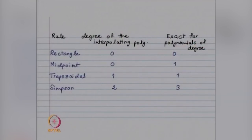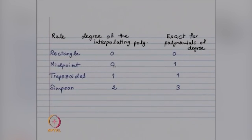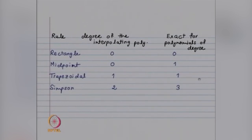For the rectangle rule, the degree of the interpolating polynomial was 0 and you got exactness for polynomials of degree 0. For the trapezoidal rule it was degree 1 in both cases. For the midpoint, the degree of the interpolating polynomial was 0 and you had exactitude for linear polynomials. For Simpson, a quadratic polynomial was interpolated and we got exactitude for cubic polynomials. These trapezoidal and Simpson's rules come under what are known as Newton-Cotes formulae.